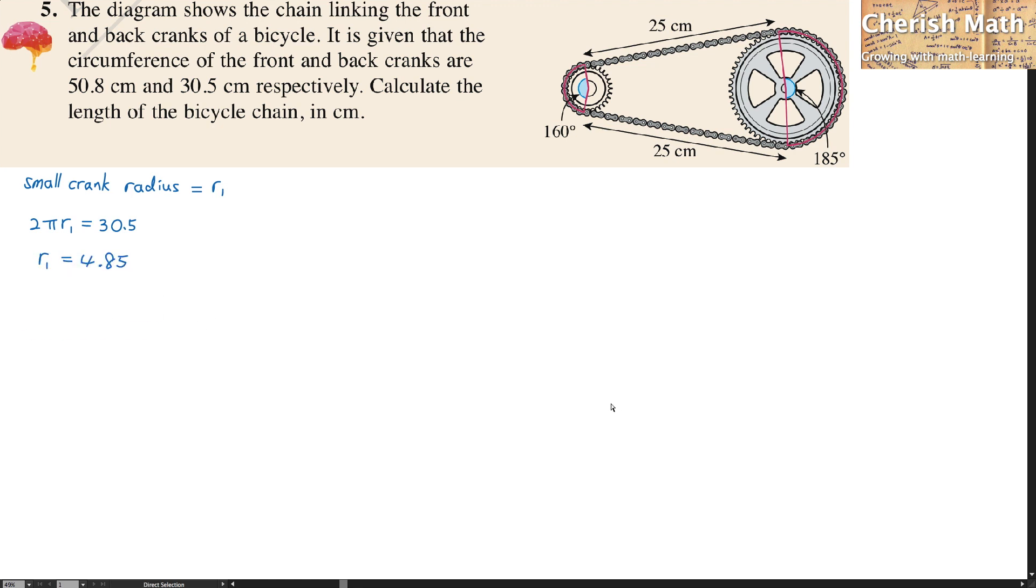Now I'm going to find the value of the small crank arc using S for the arc, which equals the radius times theta as angle in radians. That is 4.85 times 180 degrees over 180 degrees times π, and the value I'm getting is 13.54.